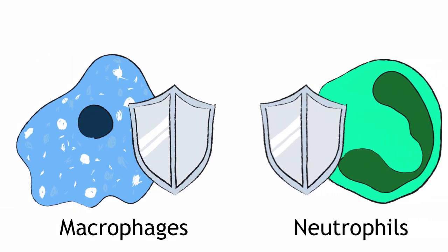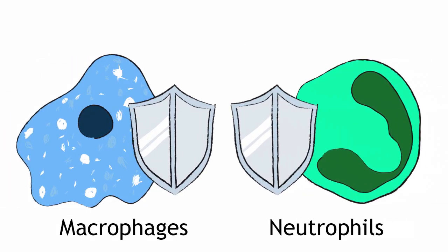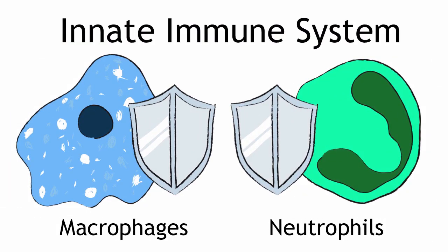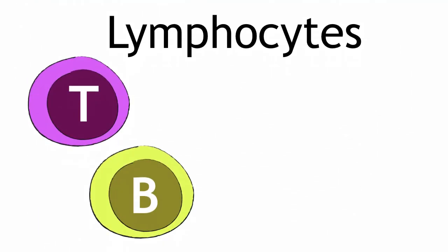Both macrophages and neutrophils are part of the so-called innate immune system, and these cells are part of the first line of defense against invading pathogens. If the bacteria cannot be controlled by members of the innate system, then more specialized immune cells called lymphocytes will be recruited to your leg.